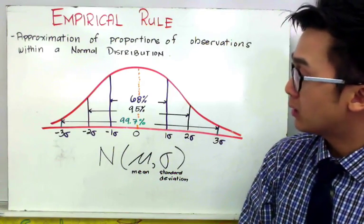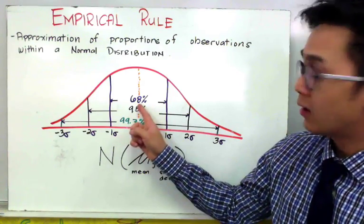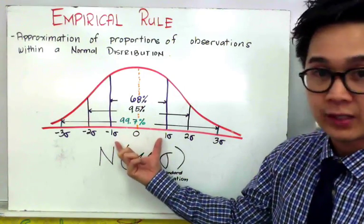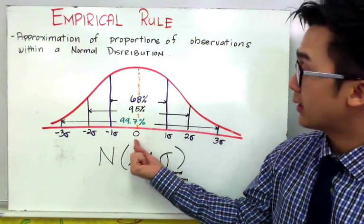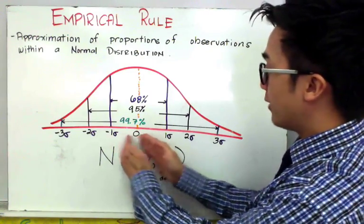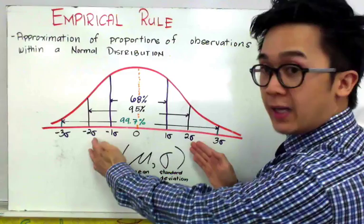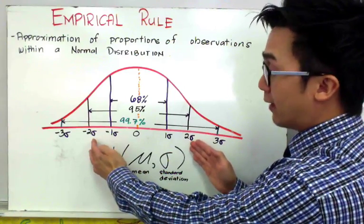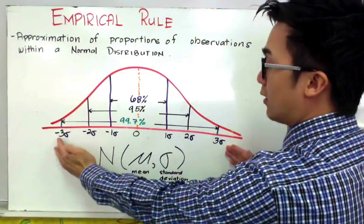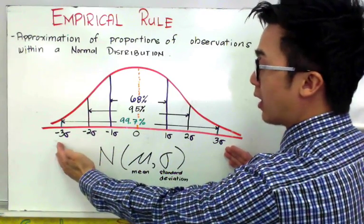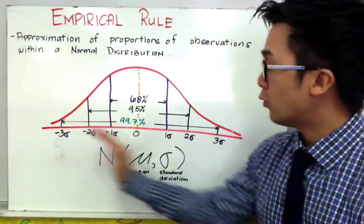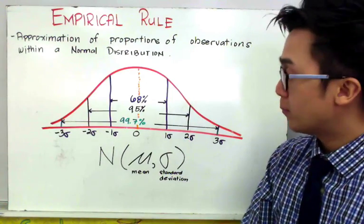According to the empirical rule, 68% of observations will fall within one standard deviation away from the mean, 95% of observations will fall within two standard deviations away from the mean, and 99.7% of observations will fall within three standard deviations away from the mean.